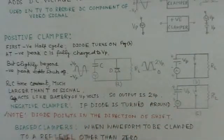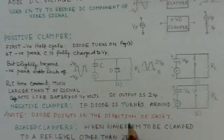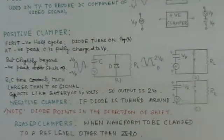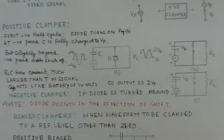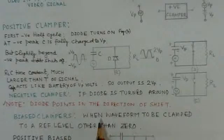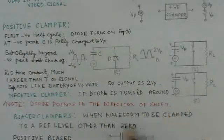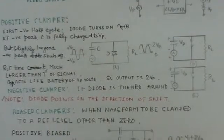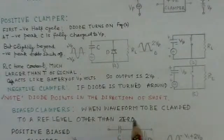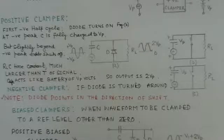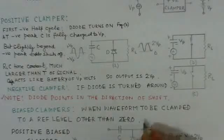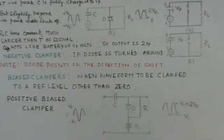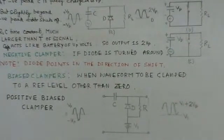So this is the direction of the power, so this is just a rule of thumb. That means if you have to determine how the output would look like and where it will shift, you can just find out by this guess. Now instead of this, if you have a biased clamper, when a waveform is to be clamped to some reference level, you can put a battery in series with the clamping diode.